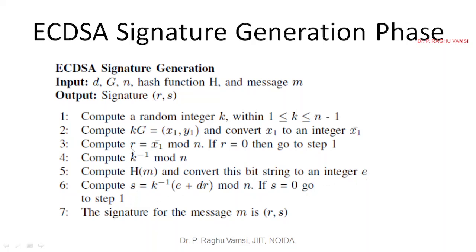Now the inverse modulo we have calculated. s equals k inverse of this integer plus the key that you are going to use, that is the private key here. D is the private key. D into r value that you have obtained here. You perform the multiplication and perform modulo with the prime number that you have selected. Now you will get the small s.